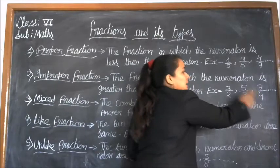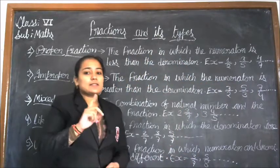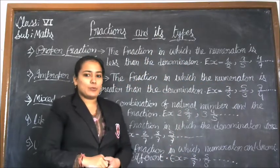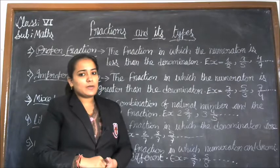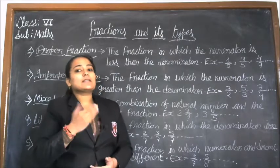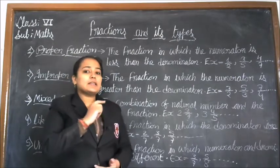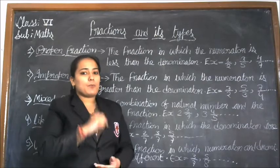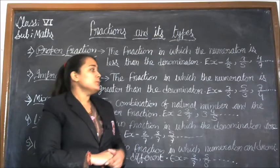Next example, 7 upon 4: 7 is the numerator, 4 is the denominator, and 7 is greater than 4. Therefore it is an improper fraction.